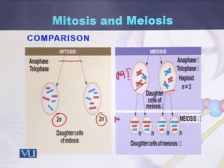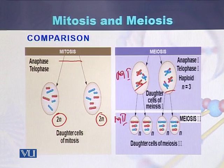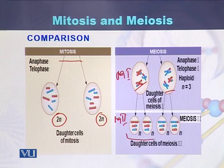As a result of meiosis 2, there will be four cells because each cell will produce two daughter cells. This process — meiosis 2 — is like mitosis in that each cell is divided into two cells, resulting in four haploid cells.